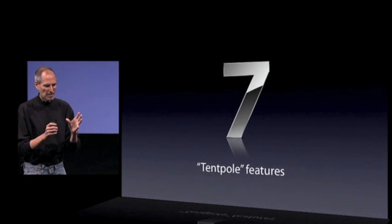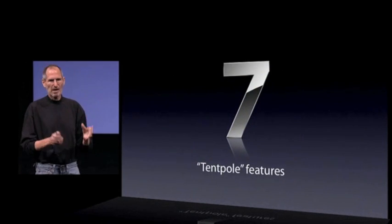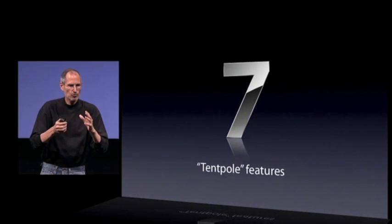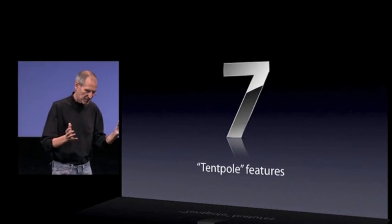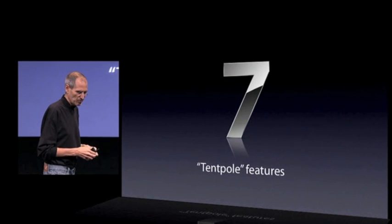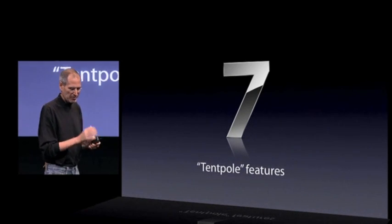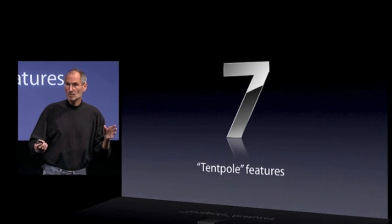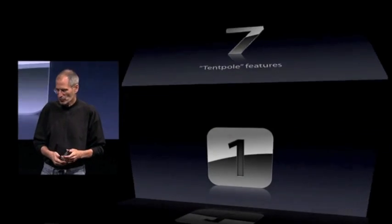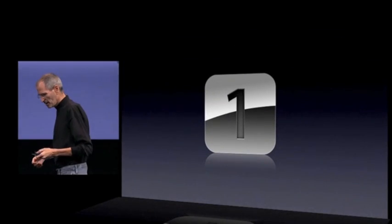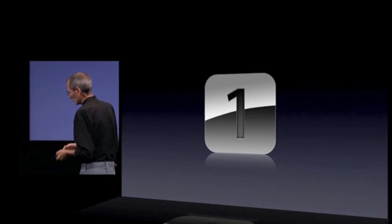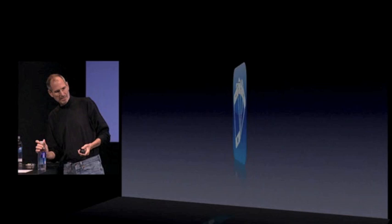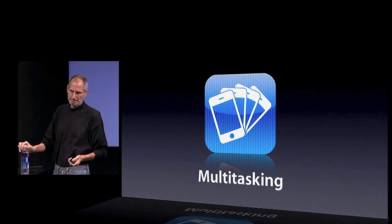Now of those, we're going to talk about seven today. We call them tentpole features. We don't have time to talk about all hundred, but we're going to talk about seven of them today. So let's get into it. Let's start off with the first one, which is probably going to be the biggest one, and that is multitasking.